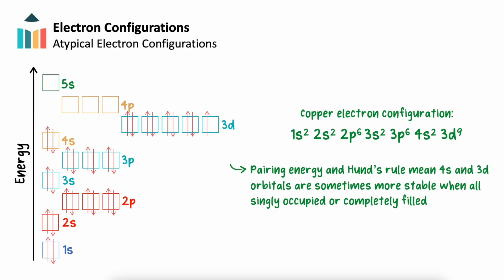Conversely we have copper. Typical guidelines would place copper's outer electrons in 4s2, 3d9. However, it's been found that copper's 3d subshell is fully occupied rather than 4s. Its electron configuration actually ends in 4s1, 3d10.